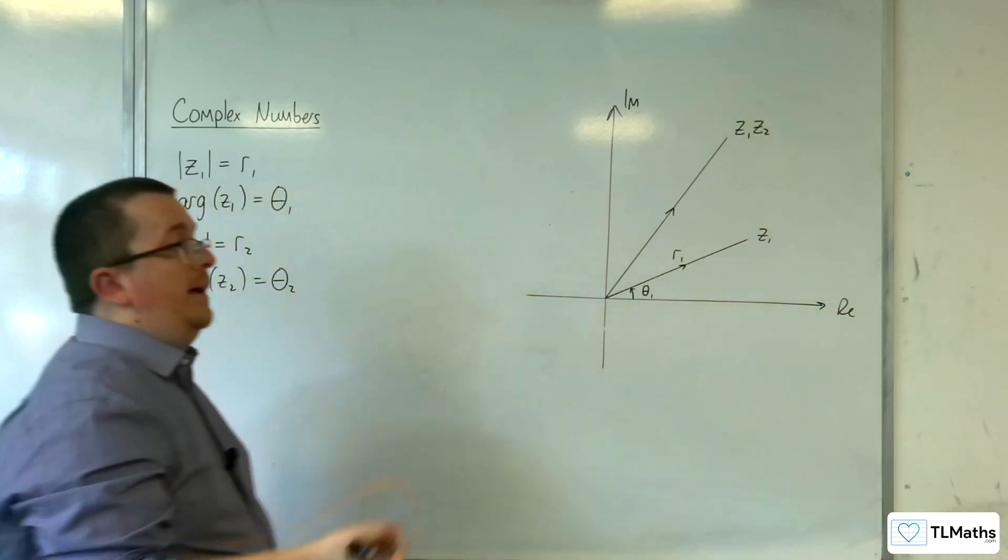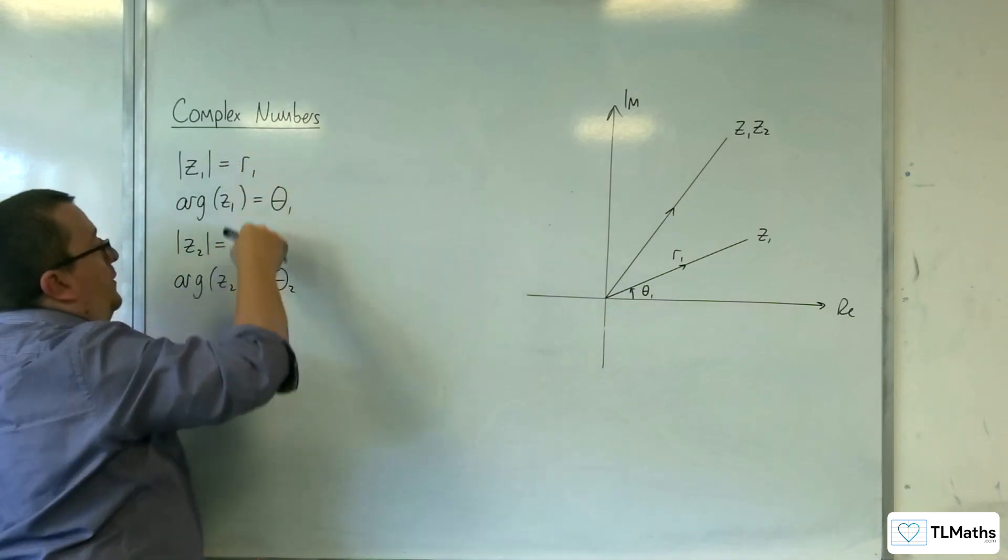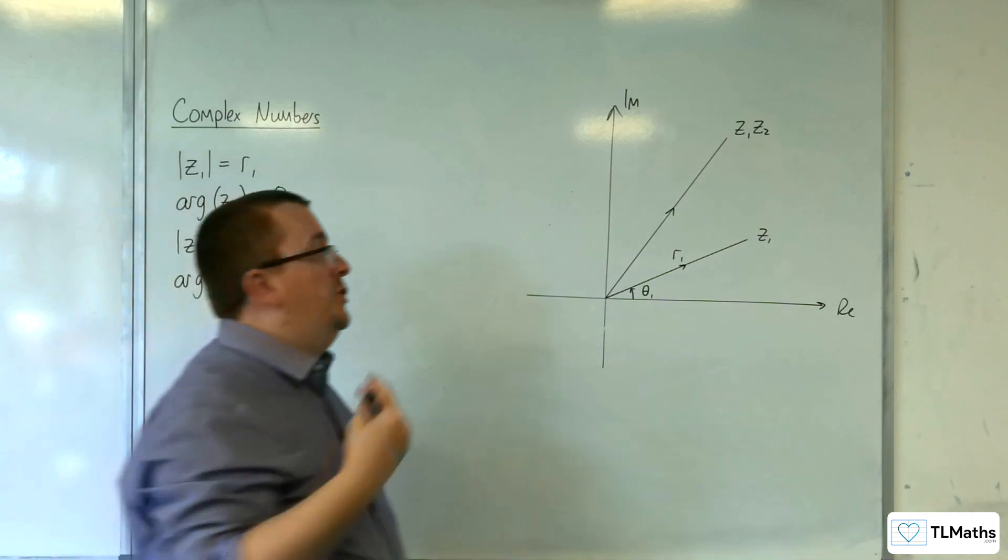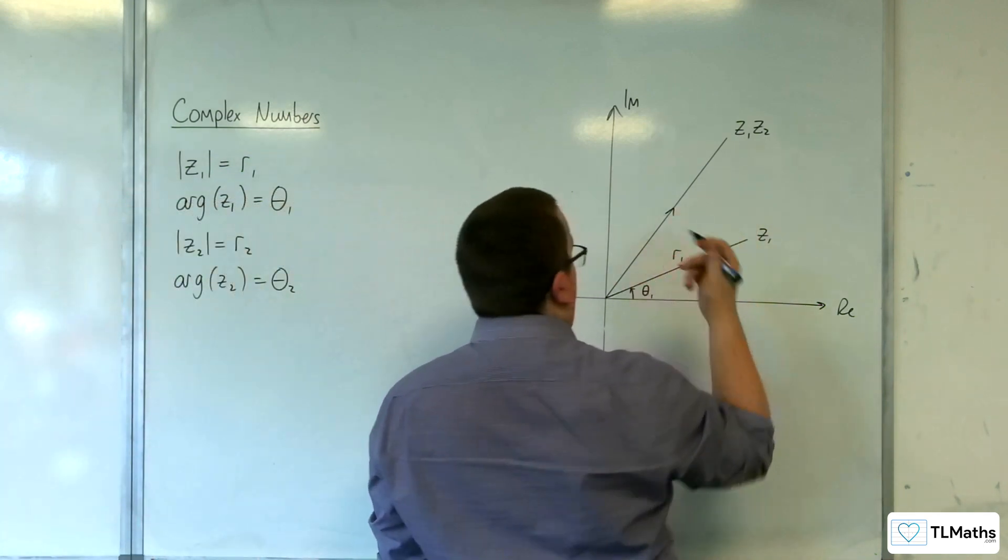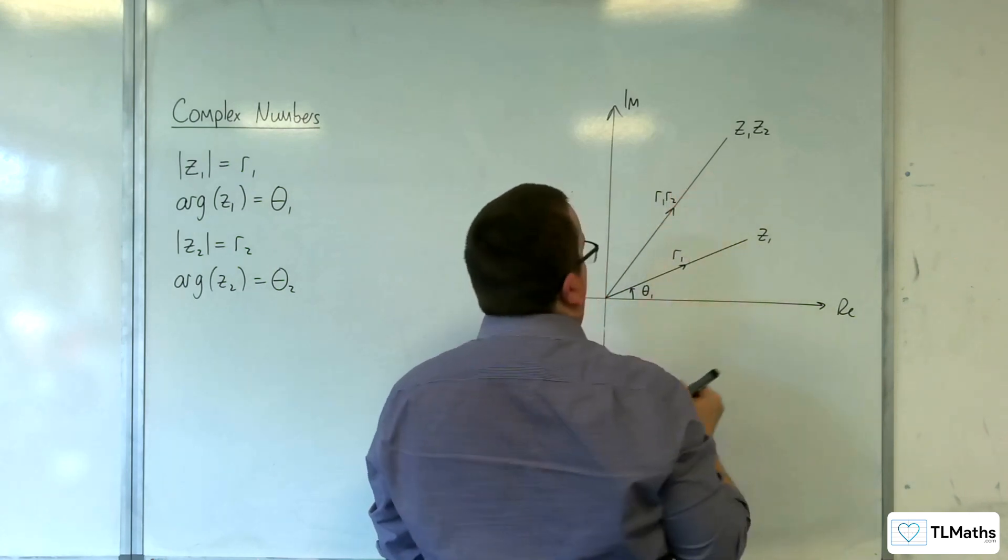Then we found that the length of Z1 Z2 would be R1 times R2, the lengths of the two complex numbers multiplied together. So this would be R1 times R2.